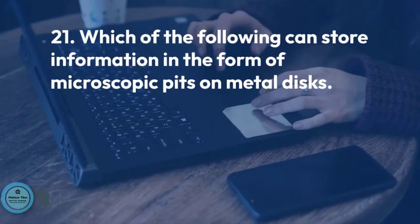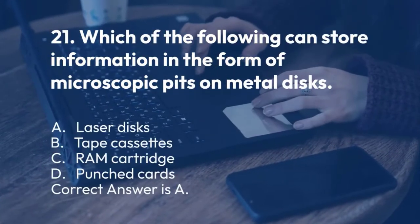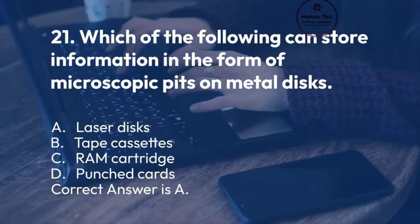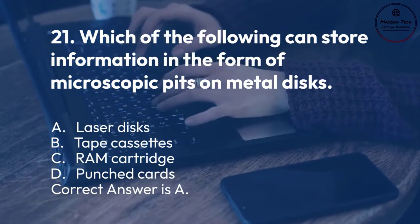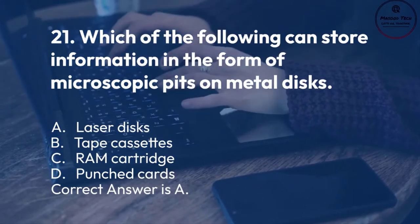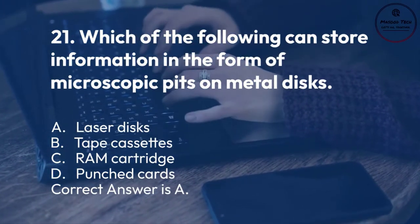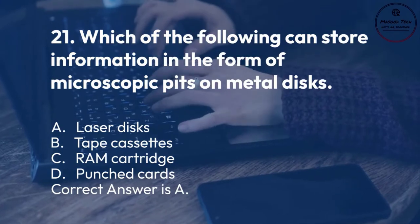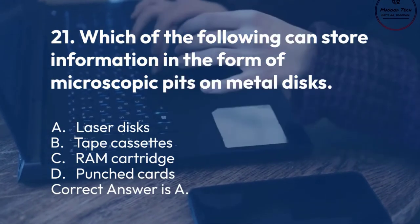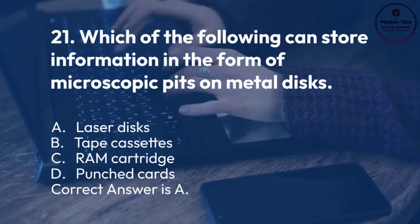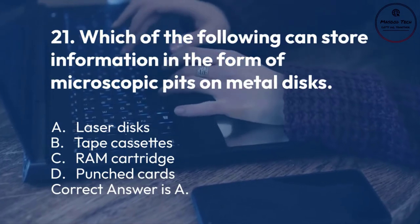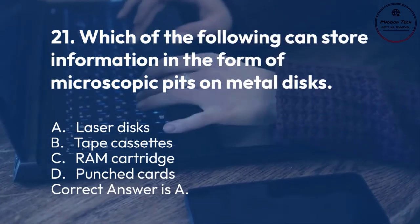Number 21. Which of the following can store information in the form of microscopic pits on metal discs? A. Laser discs. B. Tape cassettes. C. RAM cartridge. D. Punched cards. Correct answer is A.